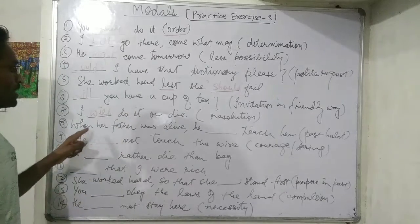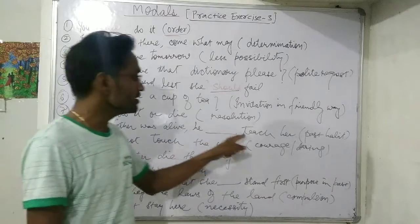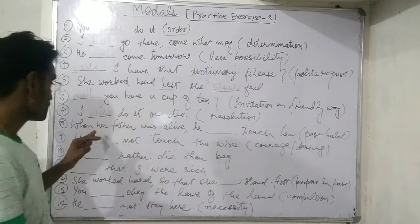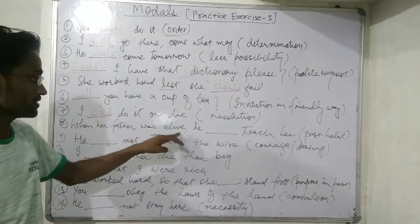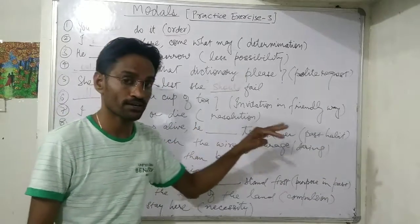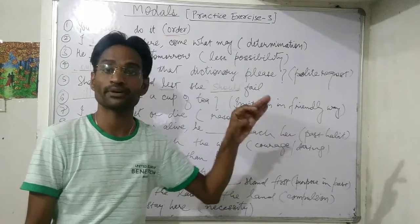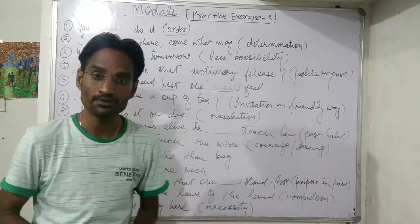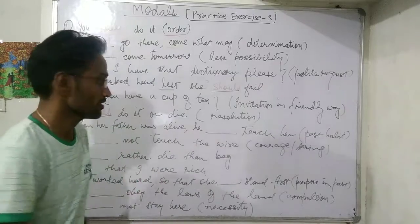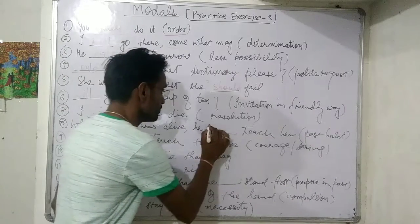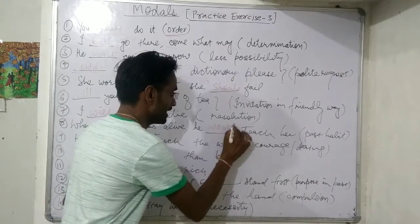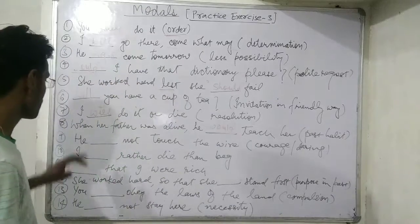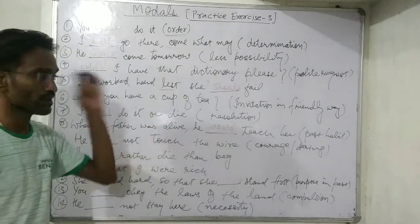Next: 'When her father was alive, he teach her' — this is past habit. When her father was alive, he used to teach her. For past habit, we use 'would.' So: 'When her father was alive, he would teach her.'